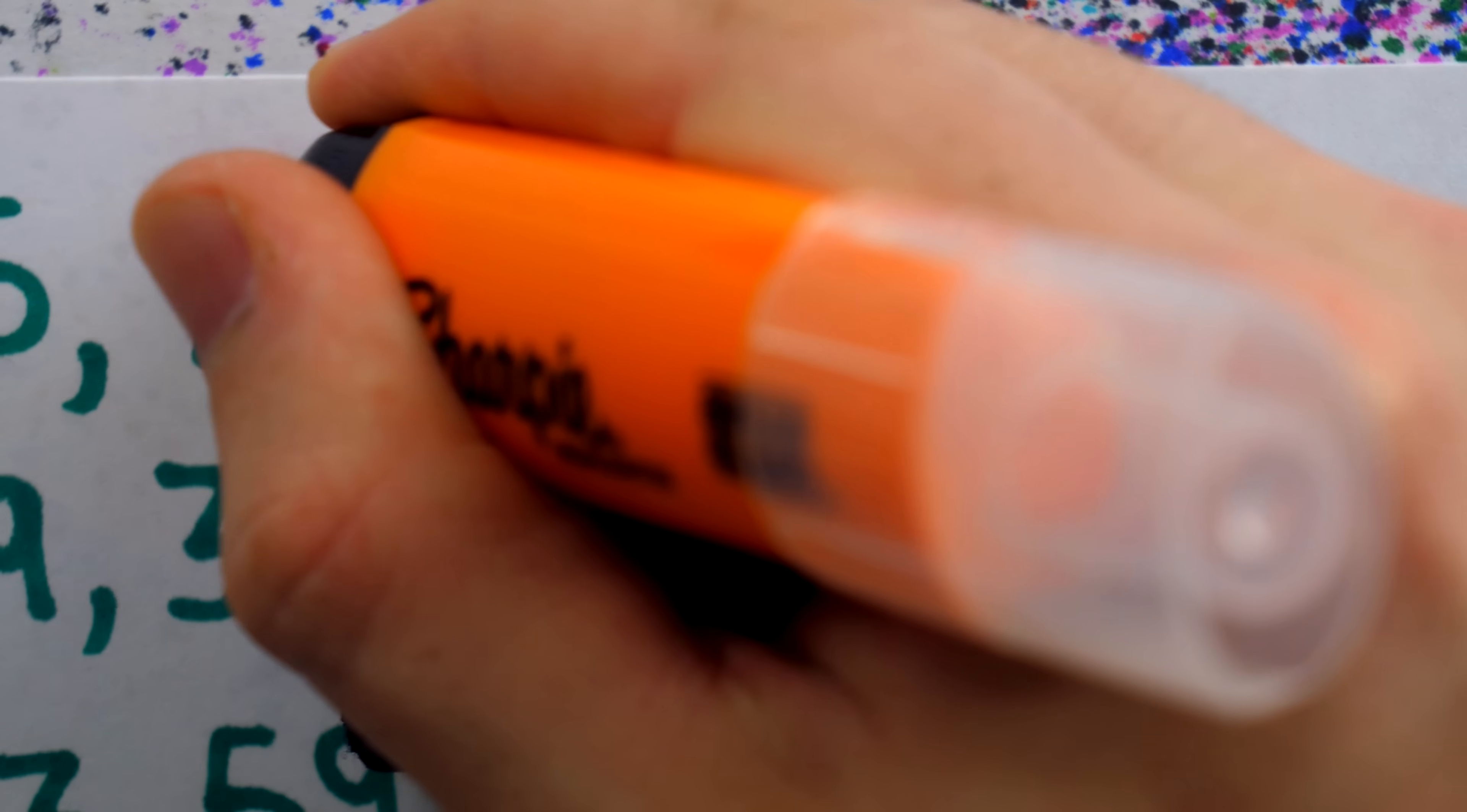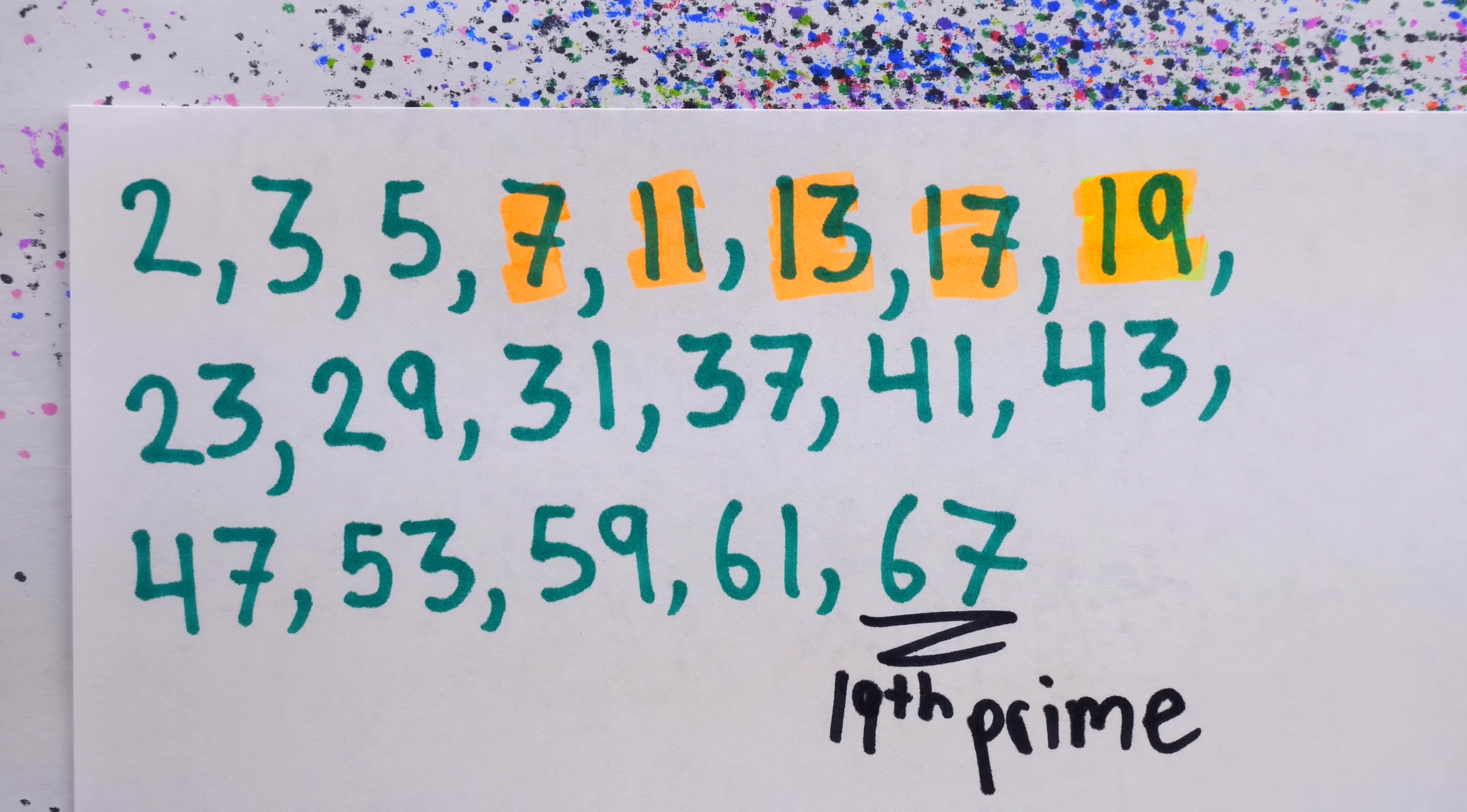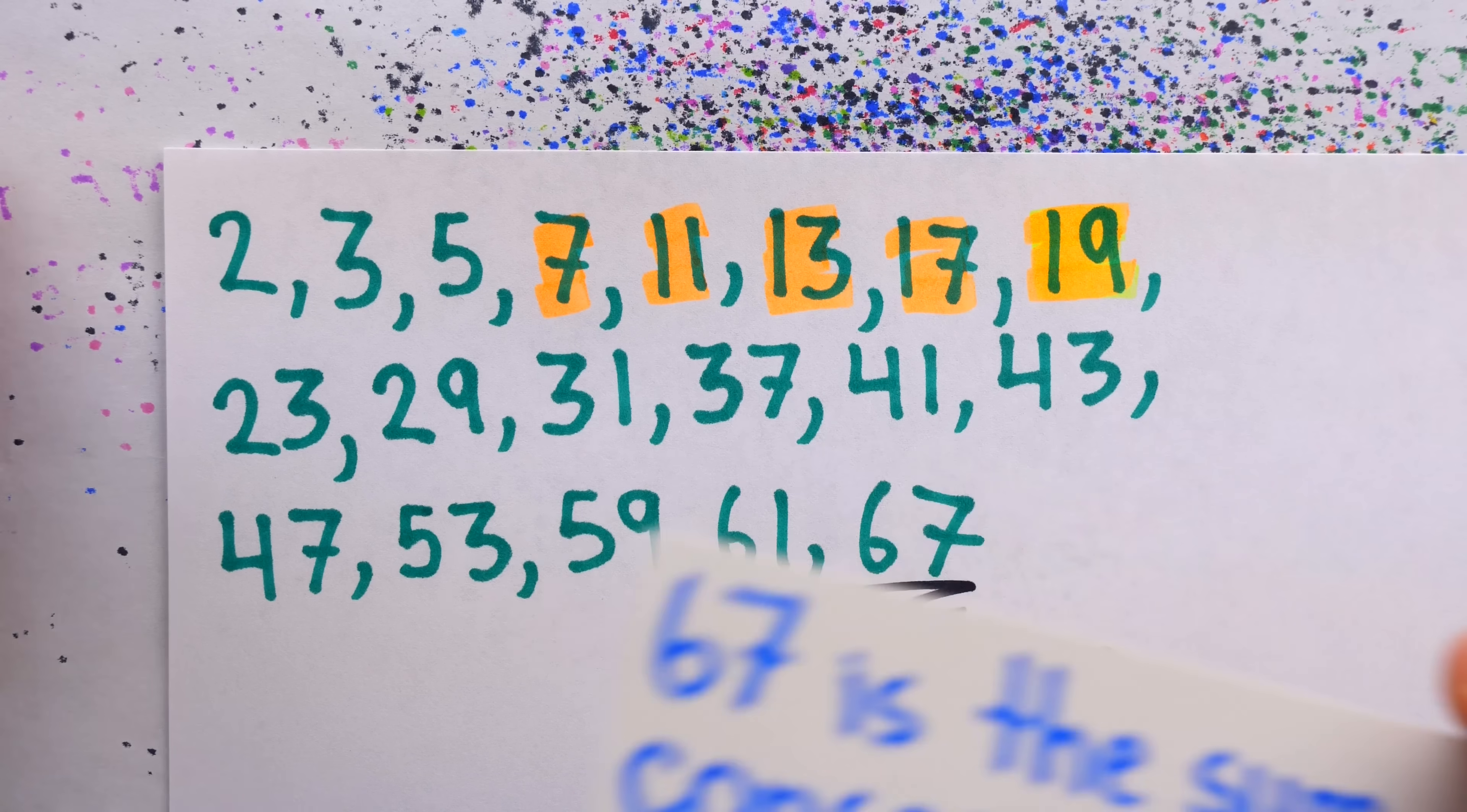You probably don't think it can get much cooler than that, but check this out. If we take the four primes preceding 19 and 19 itself, let's add these numbers up and see what we get: plus 13, plus 17, and plus 19. Look at that, it's 67. That is wild. 67 is the sum of five consecutive prime numbers.